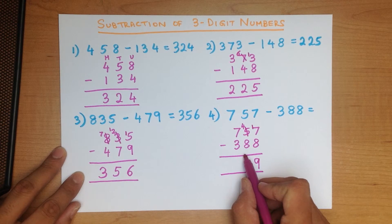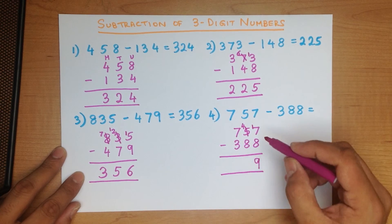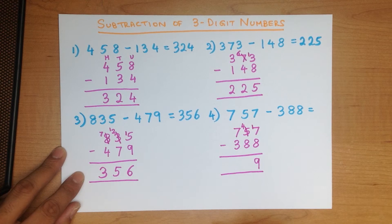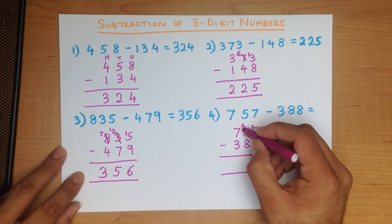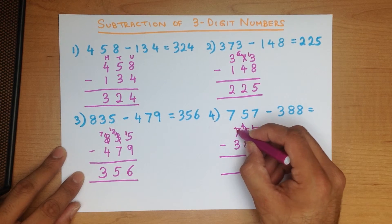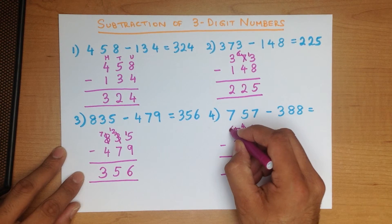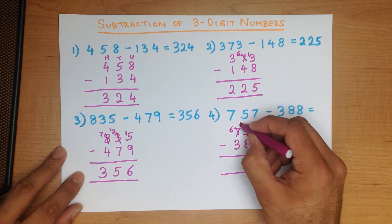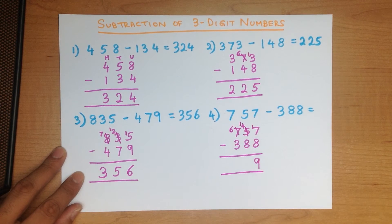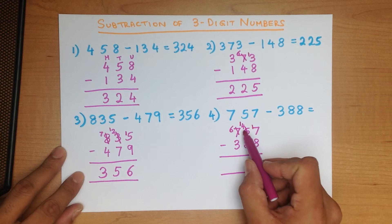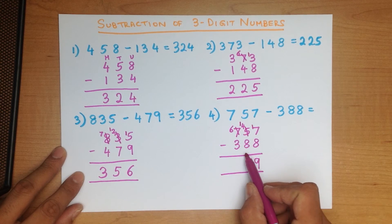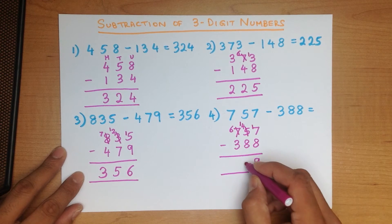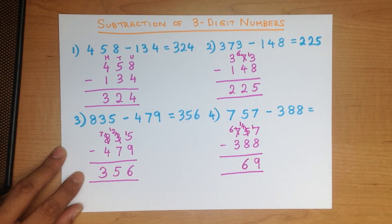We now subtract the tens column. We know that 4 is smaller than 8, so we cannot do this — we have to take 1 from the hundreds. We cross out 7 and it becomes a 6. The 1 taken gets added to the 4, so it becomes 14 minus 8, which is 6.